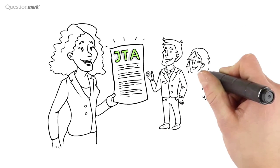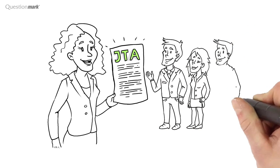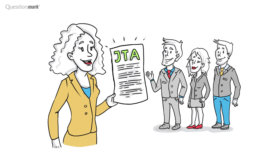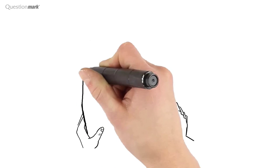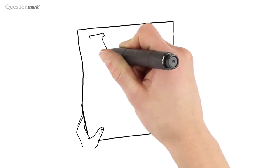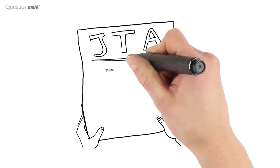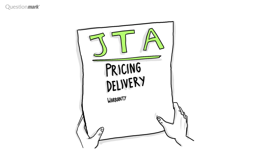The JTA asks customer service agents to identify the difficulty, importance, and frequency of the job's tasks. The results from the analysis inform Liz that the test will need to assess the ability of the team to answer questions related to pricing, delivery, and warranty of the product, as well as product features, and to do so in compliance with regulations.